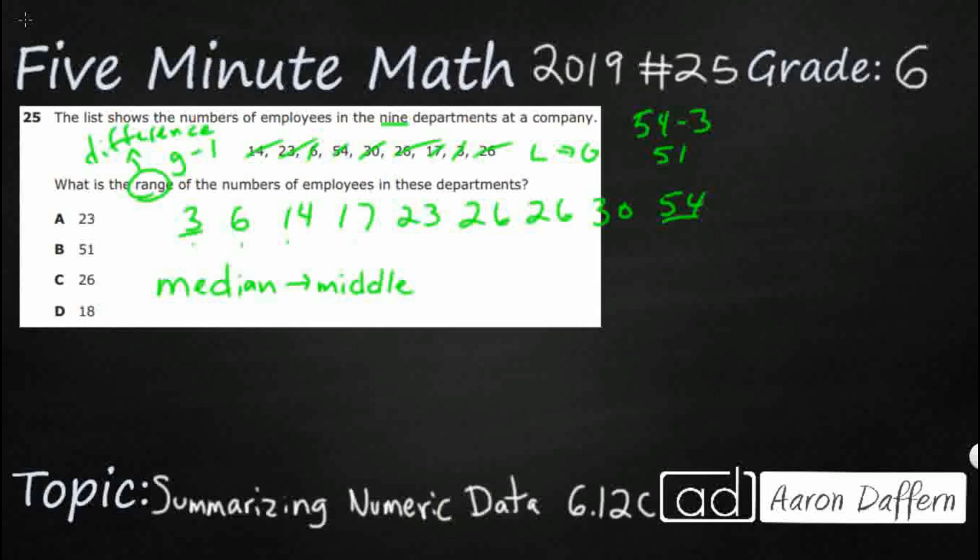This has got 9 numbers, which means it's going to be this 5th one, so 1, 2, 3, 4, 5, this right here, that's actually our median, because there's 4 numbers to the left, 4 numbers to the right. So 23 is the median, but we're looking for the range, so that is not going to be it.